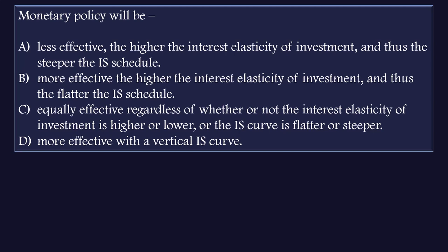Option C: equally effective regardless of whether or not the interest elasticity of investment is higher or lower or the IS curve is flatter or steeper. Option D: more effective with a vertical IS curve.